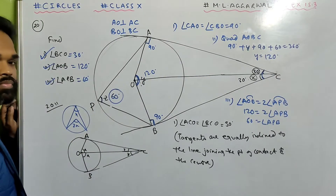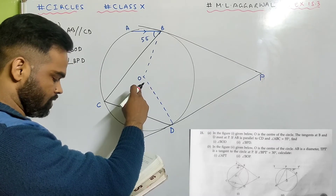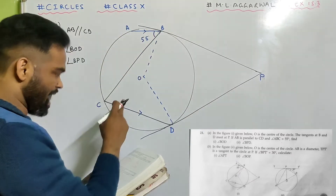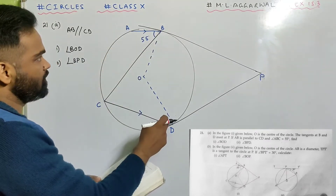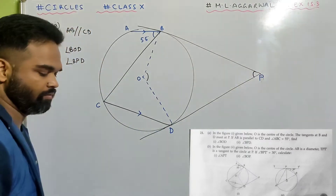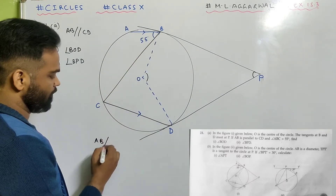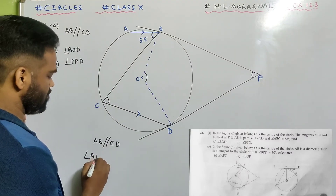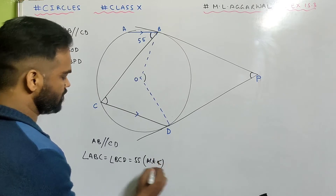Done. Now look at sum 21 part A. In the figure given, O is the center of the circle. The tangent at B and D meets at P. If AB is parallel to CD and angle ABC is 55 degrees, find angle BOD and angle BPD. AB is parallel to CD, so angle ABC equals angle BCD equals 55 degrees — alternate angles.